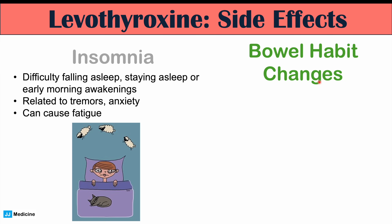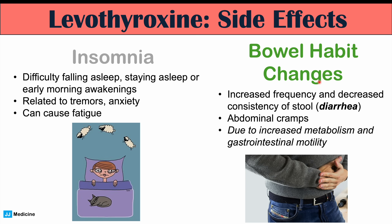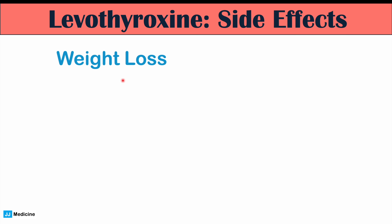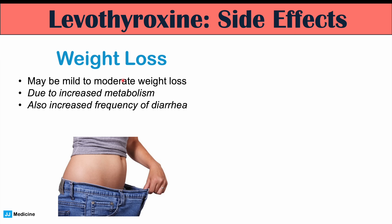Bowel habit changes are another side effect, including increased frequency and decreased consistency of stool — essentially diarrhea — which is more likely with too high a dose. Abdominal cramps can occur along with this, due to increased metabolism and gastrointestinal motility. Weight loss, ranging from mild to moderate, can also occur due to increased metabolism and increased frequency of diarrhea.